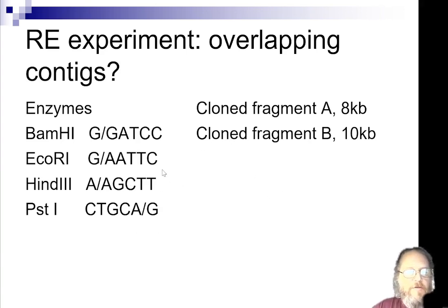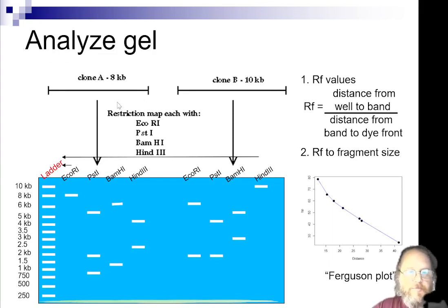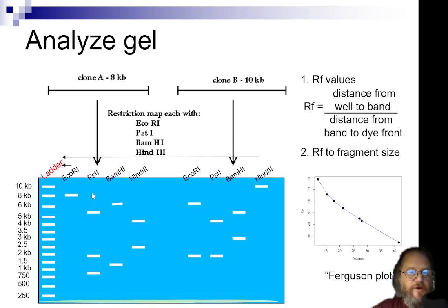Information about the cuts will help you determine whether two fragments come from the same region. For this experiment, four enzymes are used: EcoRI, PstI, BamHI, and HindIII — notice that all of them generate an overhang cut. We digested the fragments as single enzymes: tube 1 is EcoRI for clone A, tube 2 PstI, tube 3 BamHI, tube 4 HindIII, and similarly tubes 5 through 8 for clone B.